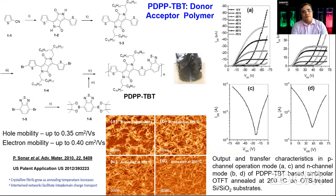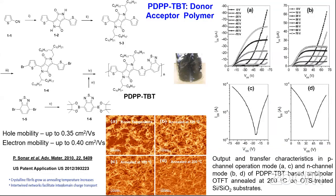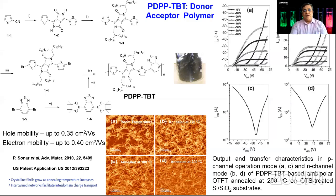I'd like to show you some of the DPP polymers we synthesized. Taking thiophene carbonitrile and doing a one-step synthesis gives us the DPP core. Once we alkylate with branched alkyl chains, we make a soluble monomer. After bromination and combining with a boronic ester or benzothiadiazole, we make a polymer. The polymer color is a dark black, which is typical of a low bandgap polymer. Looking at the morphology under various annealing conditions, at 180 degrees Celsius we get a very nice fibrillar morphology with interconnected structure, which reflected in mobility values of 0.35 and 0.40 cm² per volt-second.